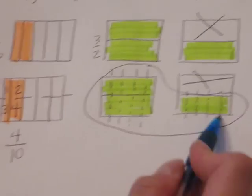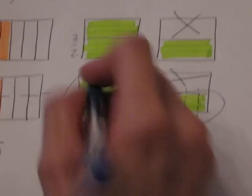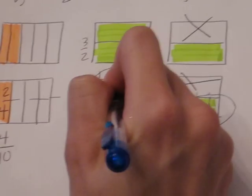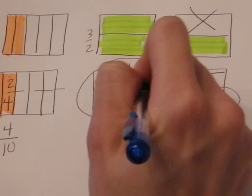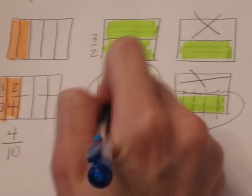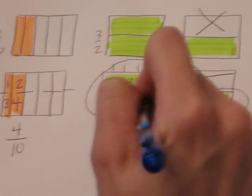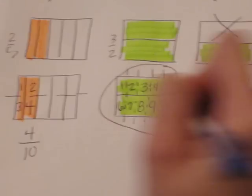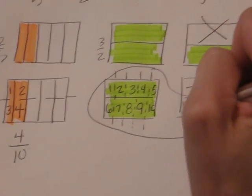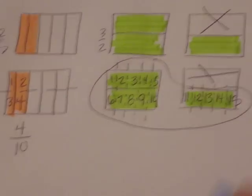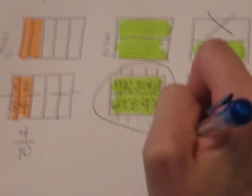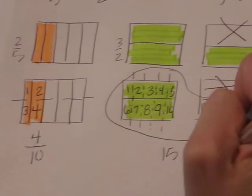So now what we need to do is we're going to count how many pieces make up the unit now. One, two, three, four, five, six, seven, eight, nine, ten, eleven, twelve, thirteen, fourteen, fifteen. So fifteen is the unit now.